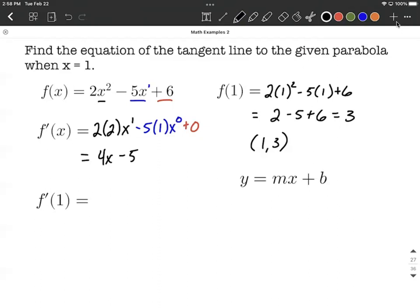Next, let's evaluate it at 1. So we do 4 times 1 minus 5, which is 4 minus 5, giving us negative 1. Remember, the derivative means the same thing as our slope, so the slope of our line is negative 1.